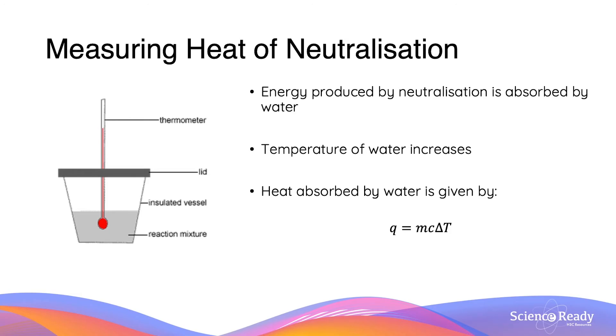Let's go back to the calorimeter. Why does the quantity of heat equation work? Well, the energy that is being produced by the neutralisation reaction is being absorbed by the water. That is going to lead to an increase in the temperature of water. And so we can use the q = mcΔT equation to calculate the quantity of heat.